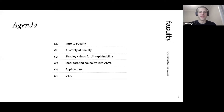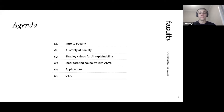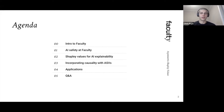So let's go over what I have planned for the hour. I'll begin with an introduction to Faculty, as well as my role at the company. Then I'll give some background on AI safety and how we think about that at Faculty. Then we'll get into the main part of today's talk: background on Shapley values, what they are and how they can be used for AI explainability. Then I'll show you how at Faculty we've incorporated causality into AI explainability with asymmetric Shapley values, followed by some applications of ASVs, and then Q&A.